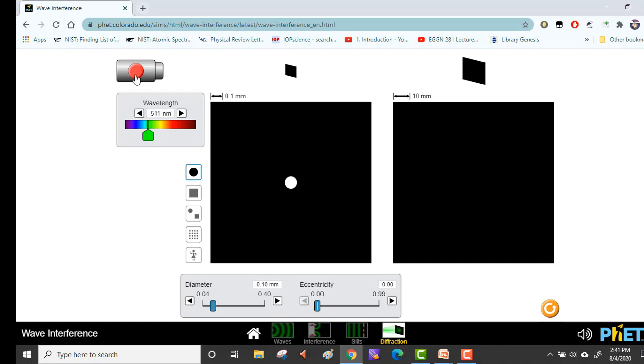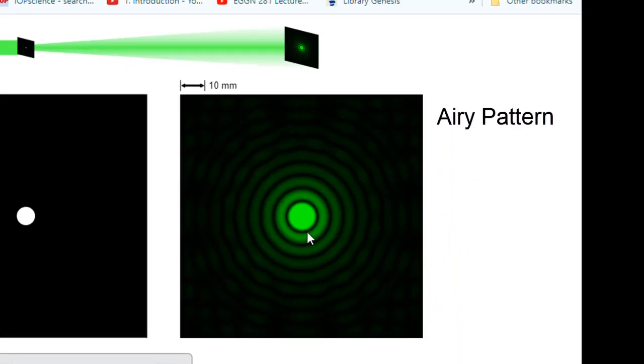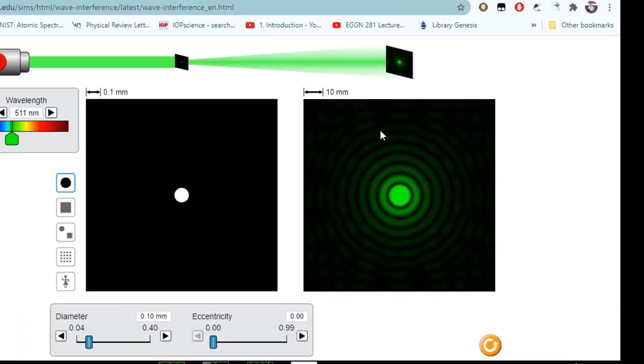We switch on the laser. Now what we see on the right is what is known as an airy pattern. It is essentially a far field image of the diffraction.